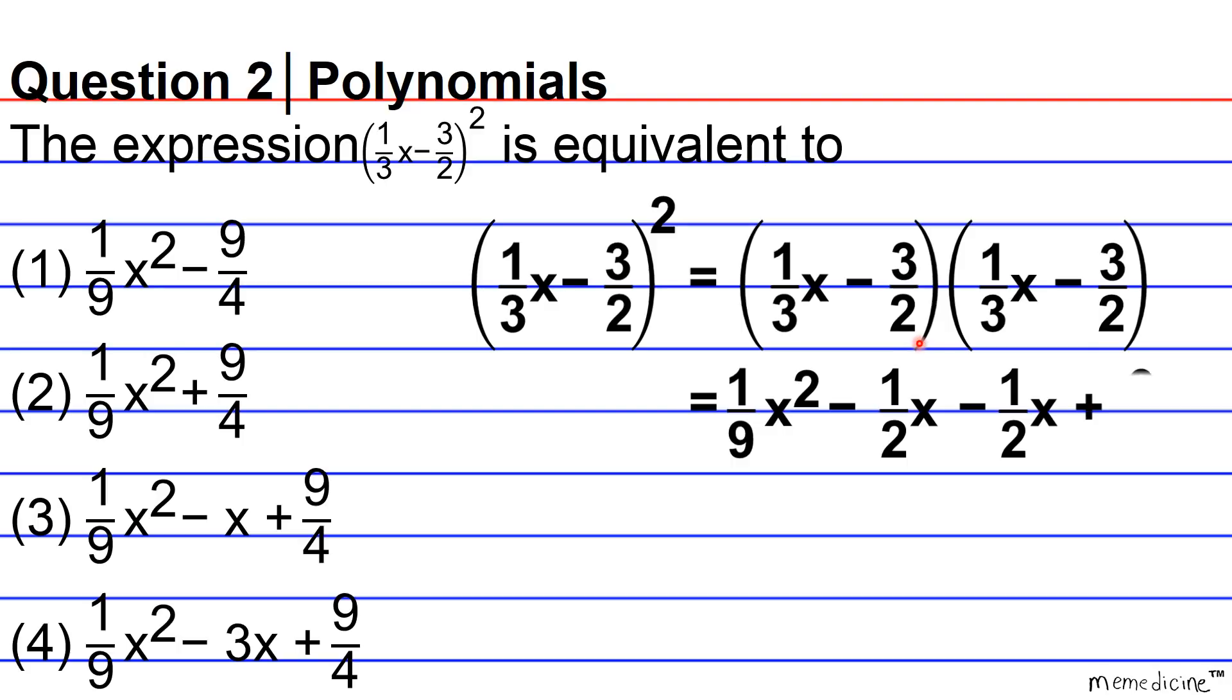And then when you square or multiply the last two terms by itself, two negative signs yield a positive sign and 3 times 3 is 9 and 2 times 2 is 4 in the denominator.